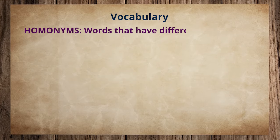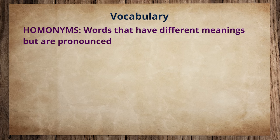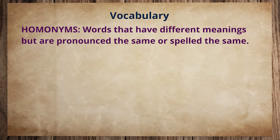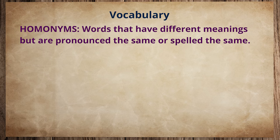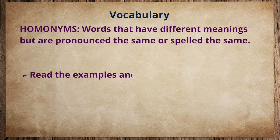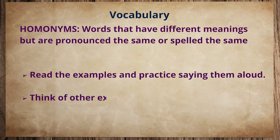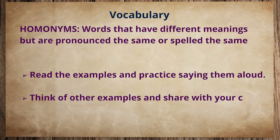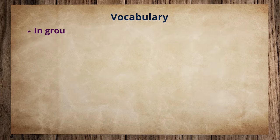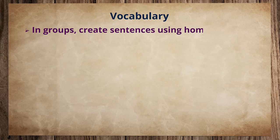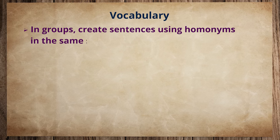When we come to vocabulary, we can do a lot of activities. Here is an example of homonyms — words that have different meanings but are pronounced the same or spelled the same. Read the examples and practice saying them aloud. You can think of other examples and share with your class. In groups, ask students to have a list of homonyms and then use them in different sentences, because students must learn how to use them in their own context.